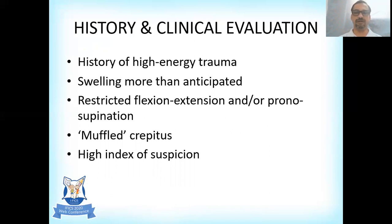History and clinical examination is very important. History of high energy trauma is present in the majority of cases. The elbow is swollen more than anticipated. There will be restriction of flexion-extension or pronation-supination. Muffled crepitus, typical of a cartilaginous lesion, will be present. One must have a really high index of suspicion if the clinical examination is not in line with what the x-ray shows or the injury history.